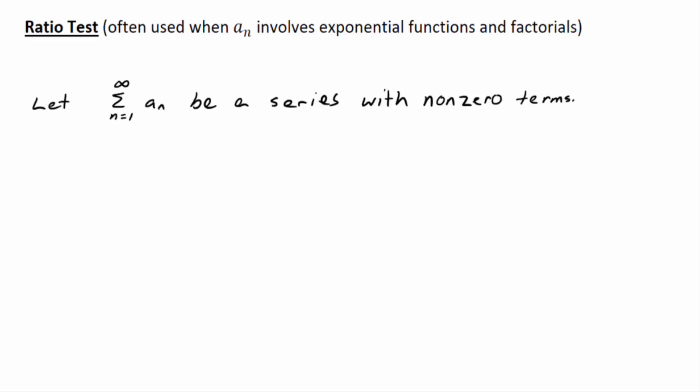It's often used when AN involves exponential functions and factorials. Let the sum N equals 1 to infinity AN be a series with non-zero terms. Three situations we want to look at. Number one, if the limit as N goes to infinity of the absolute value of this ratio, AN plus 1 over AN, equals some finite number L, and we want it to be a constant finite number L, and it turns out that that's less than one, then the series will converge, not just converge, but converge absolutely.